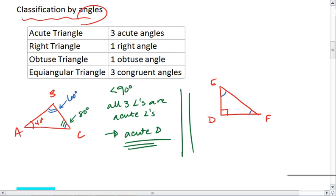And perhaps those angles are 30 degrees and 60 degrees. But as long as we have that solitary right angle, then our triangle is called a right triangle.